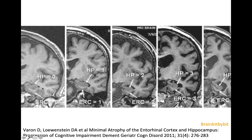You can grade the amount of atrophy with the visual rating scale that is often used, called MTA — mesial temporal lobe atrophy. It is graded from 0 to 4, taking into account the width of the temporal horn, the width of the choroid fissure, and the height of the hippocampus.